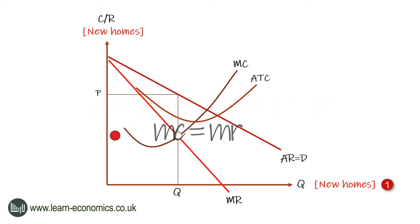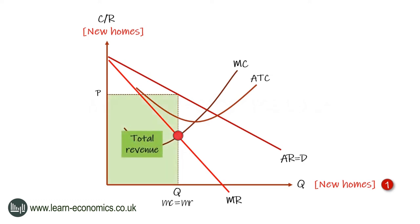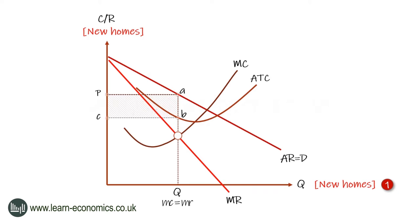Now identify profit-maximizing output and price. Next, show the area representing supernormal profits. At profit-maximizing output, the area under the average total cost curve equals total costs, while the area under the average revenue curve equals total revenue. So the rectangle of supernormal profits is the area of total revenue minus the area of total costs. This is rectangle P-A-B-C.